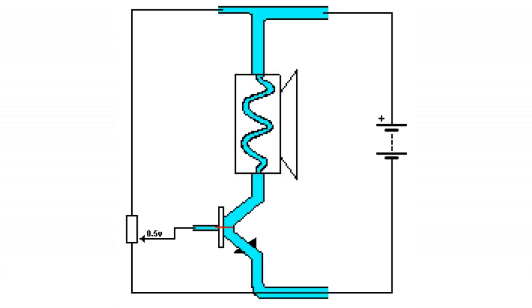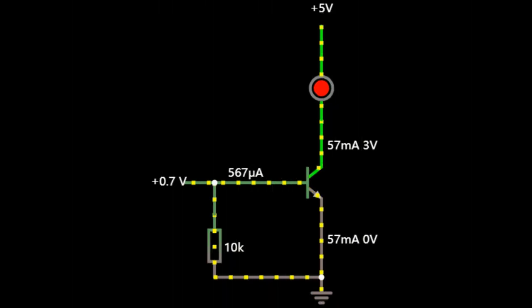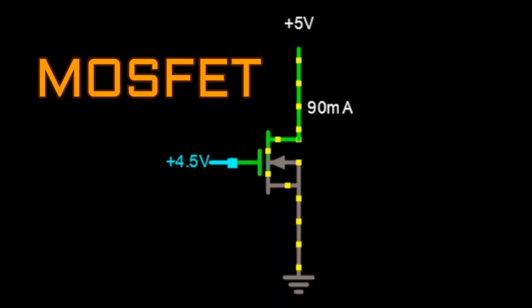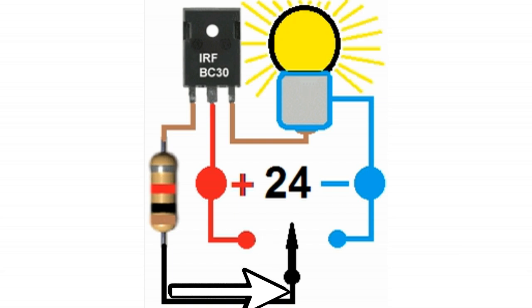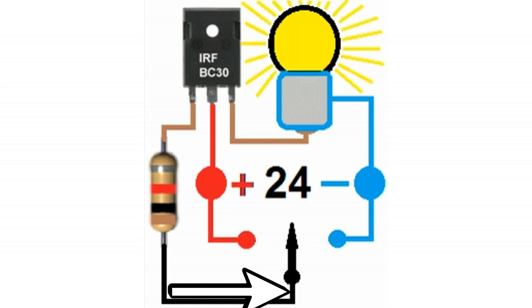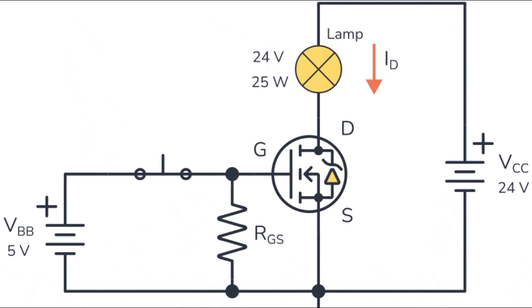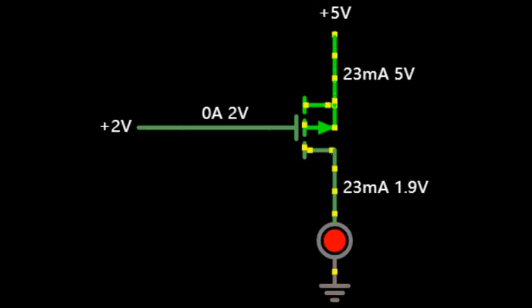Because of this, the BJT is often described as a current-controlled device. The MOSFET, on the other hand, is described as a voltage-controlled device, because its output current varies as a function of a small voltage applied to its gate. Functionally, the electrostatic field of the gate impinges on and affects the resistance of the source-to-drain channel of the device — hence the term field-effect transistor.